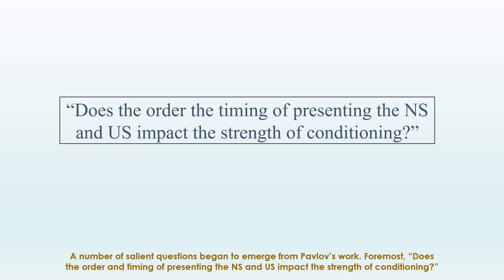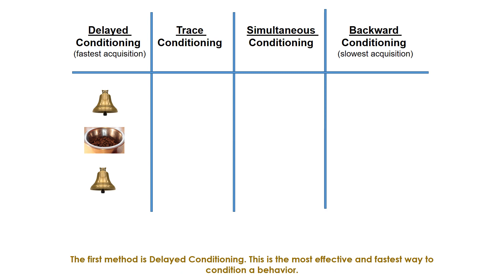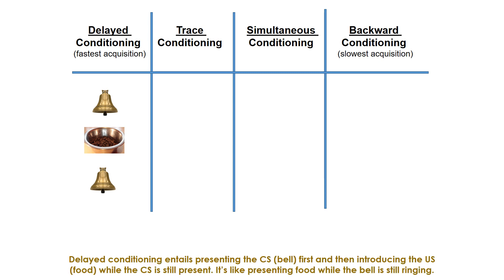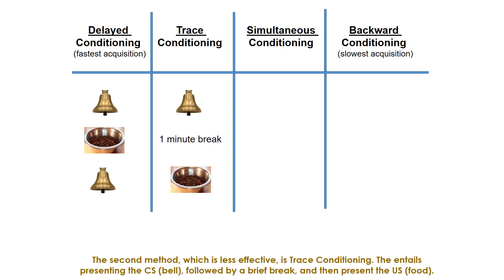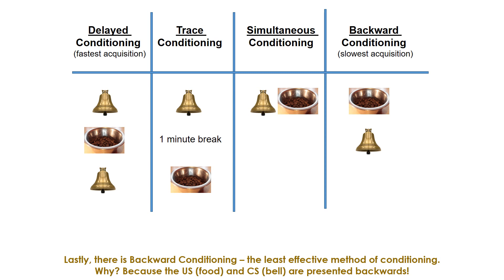A number of questions emerged from Pavlov's work. Does the order and timing of presenting the neutral stimulus and unconditioned stimulus impact the strength of conditioning? Yes. There are four methods of conditioning from most to least effective. First, delayed conditioning — the most effective — involves presenting the conditioned stimulus first, then introducing the unconditioned stimulus while the conditioned stimulus is still present, like presenting food while the bell is still ringing. Second, trace conditioning involves presenting the conditioned stimulus, followed by a brief break, then the unconditioned stimulus. Third, simultaneous conditioning presents both stimuli at the same time. Finally, backward conditioning is the least effective because the unconditioned stimulus and conditioned stimulus are presented in reverse order.